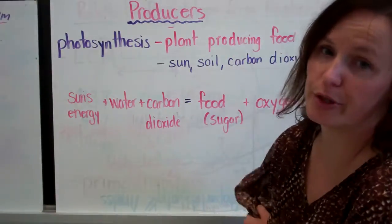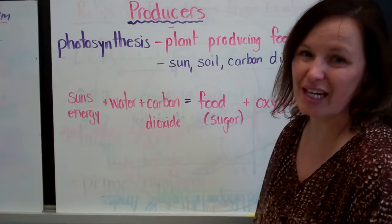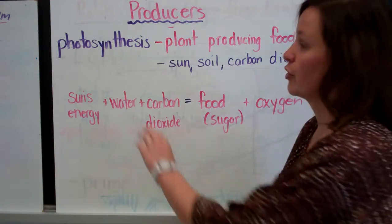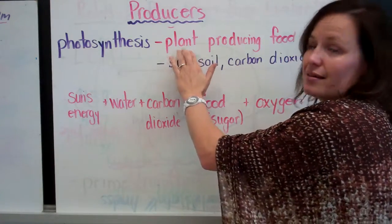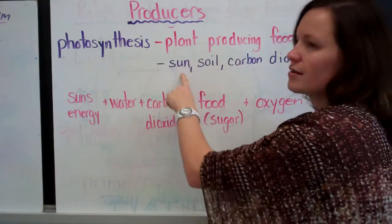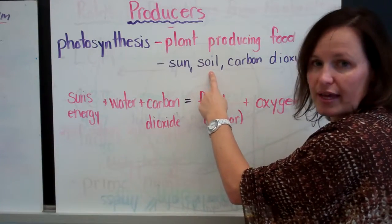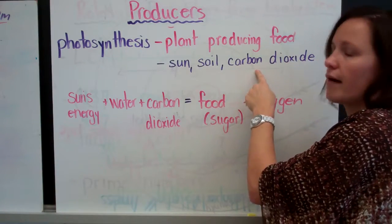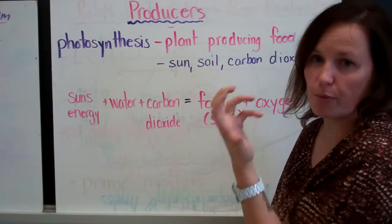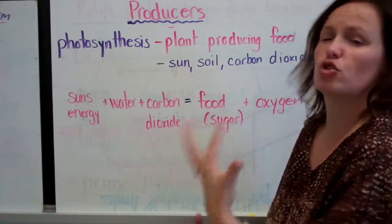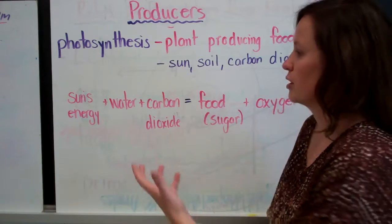First, I'm going to talk about producers. Producers are organisms that can produce their own food through photosynthesis. Plants produce their own food using the energy they get from the sun, the water they get from the soil, and the carbon dioxide they get from the air. They produce their own food in the form of sugar, and they store it as starch. And that makes them a producer.